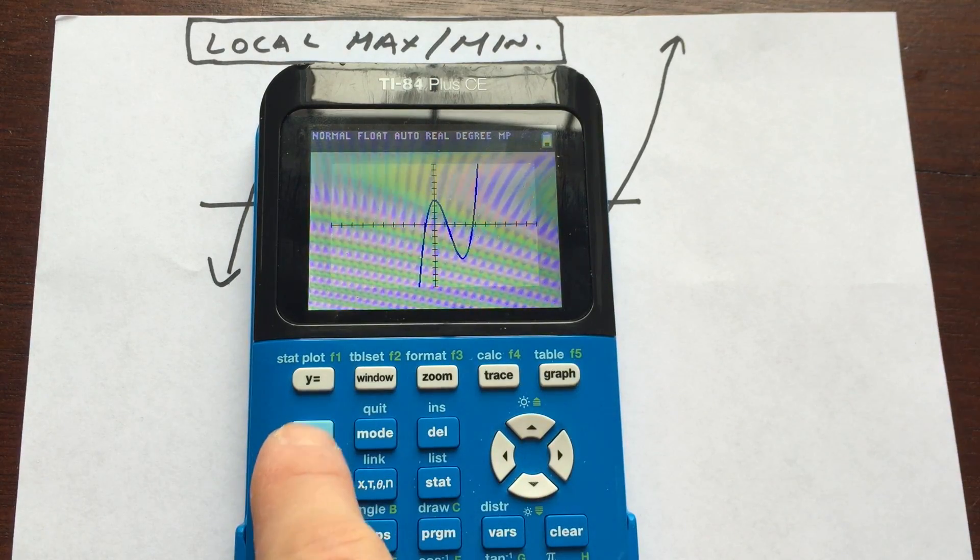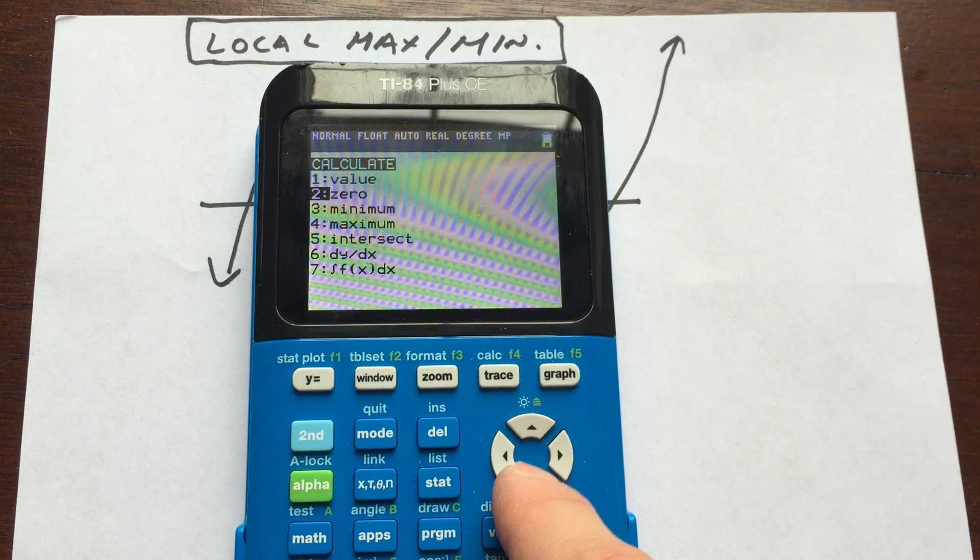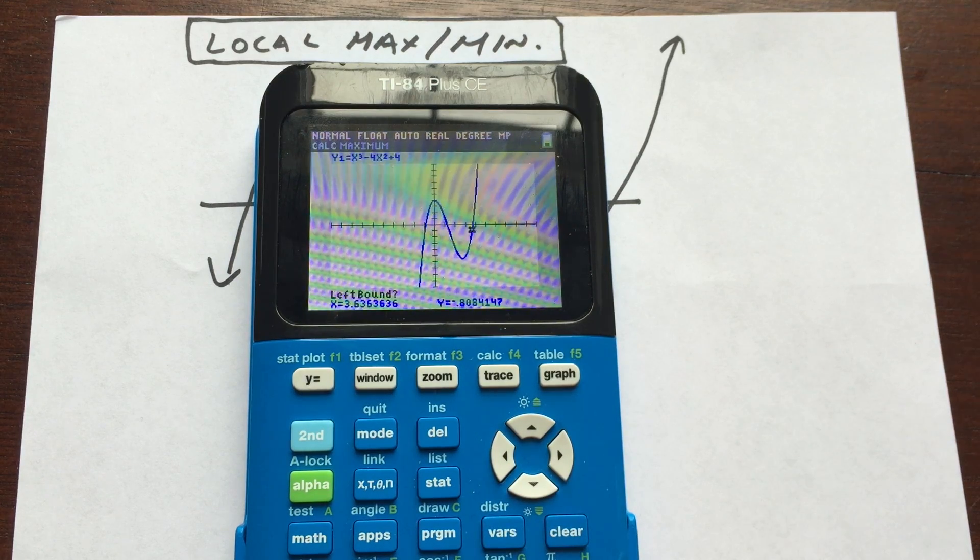So what we're going to do is we're going to go over here to second, calculate. What we want is the maximum number four. So I'm going to go to the lower right-hand corner here, press enter.